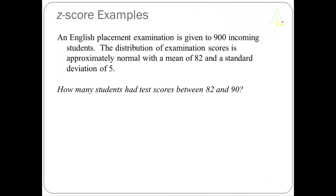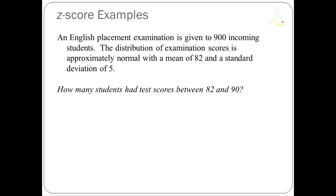This is a made-up example, but it'll give you an idea of how to work Z-score problems. Let's assume that we've given an English placement test to incoming students at a university — 900 students coming in. We know that the distribution of examination scores is approximately normal, has a mean of 82 and a standard deviation of 5. We're going to use this information to estimate how many students had test scores between 82 and 90. The first thing I like to do is graph my normal distribution out and label all the areas with the information I have.